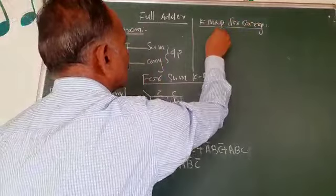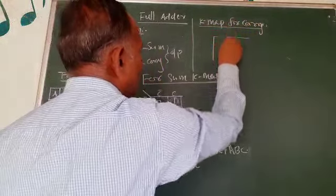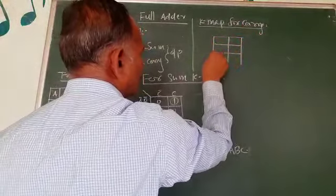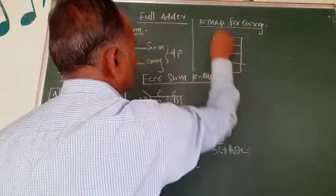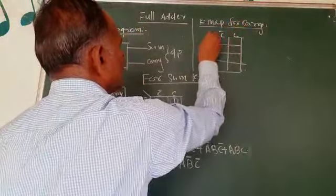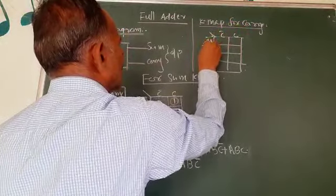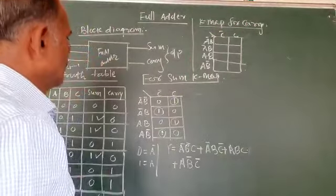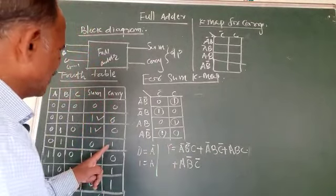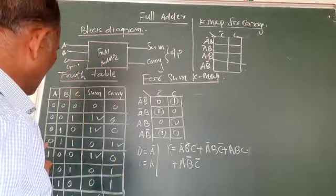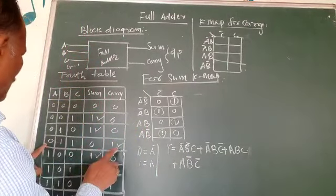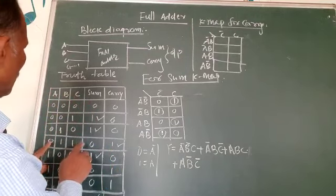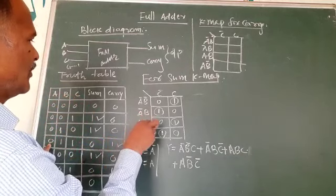Now we can draw the K-map table for carry as well, again with three variables. This is C-bar and C along the top, and A-bar B-bar, A-bar B, AB, and AB-bar along the side. We are considering SOP form, so whenever there is a 1 we consider that cell only.